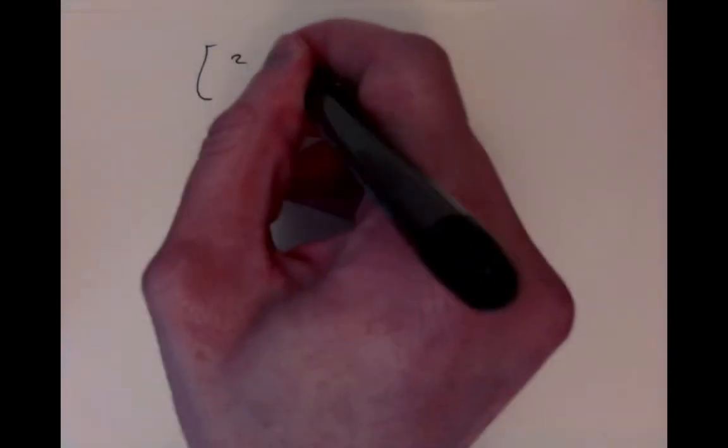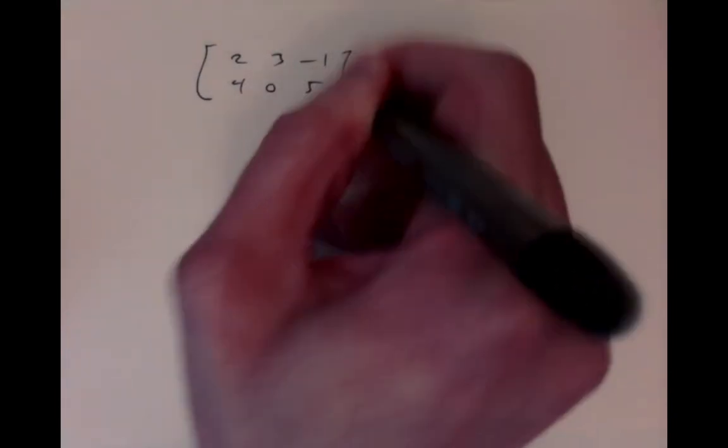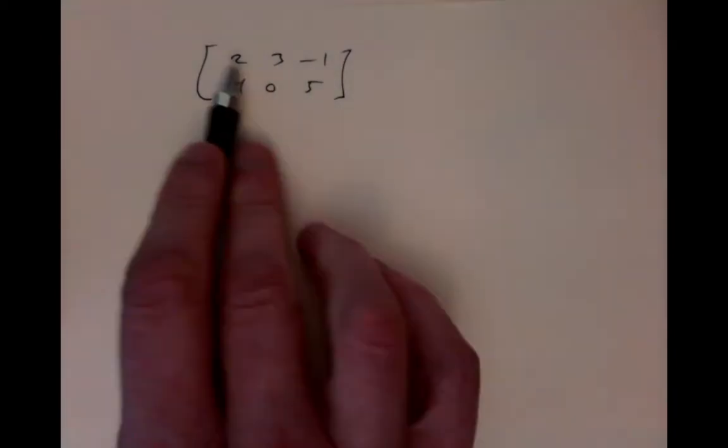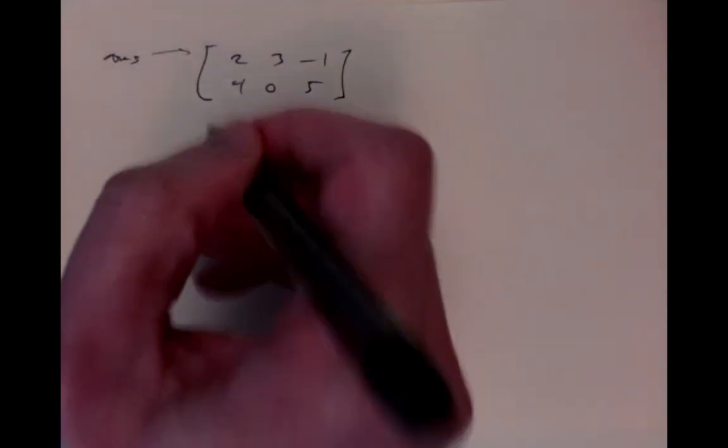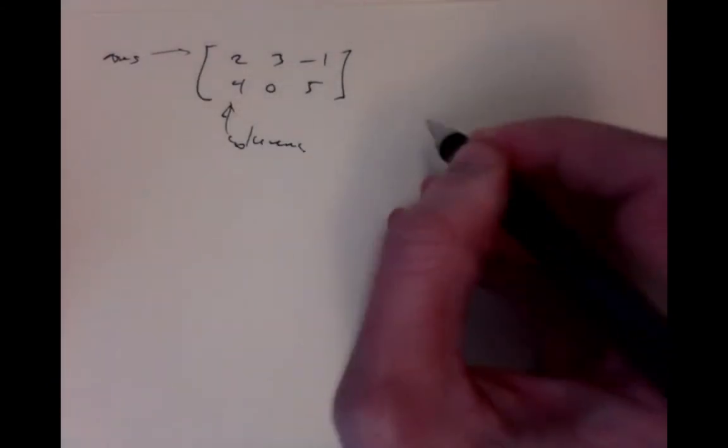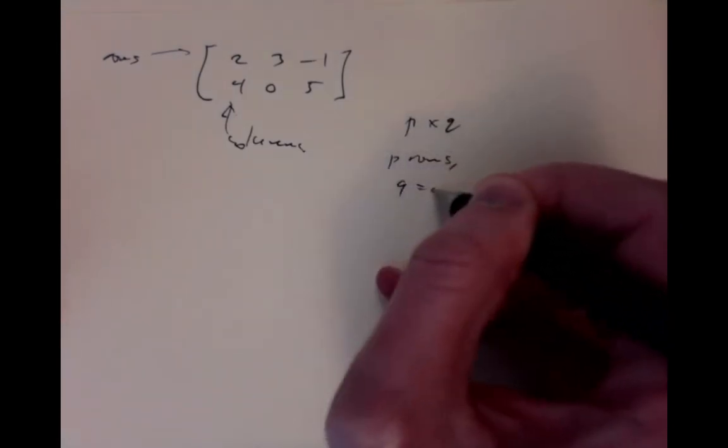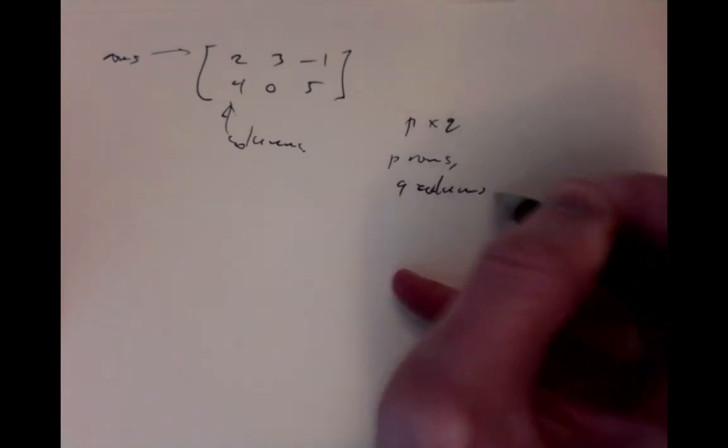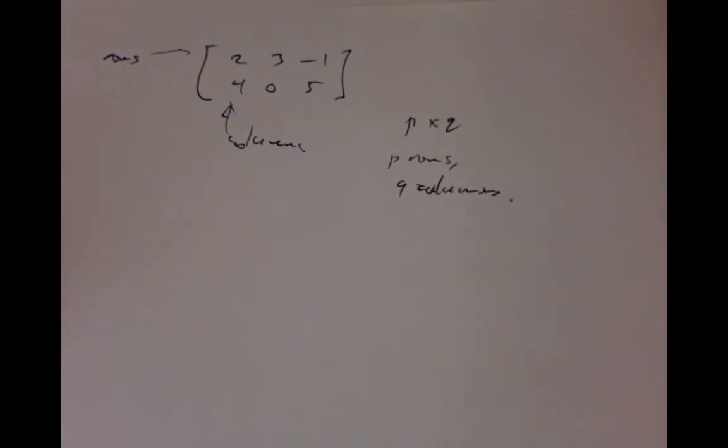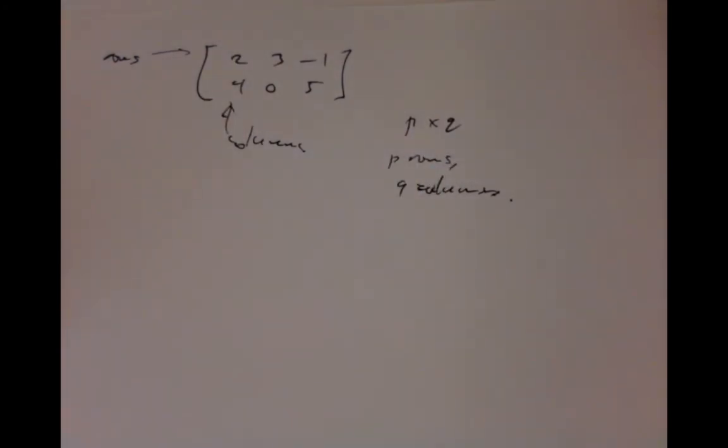A matrix is a rectangular array of numbers. We've already seen some of them. So it has rows and columns. And we'll say it's p by q to mean it has p rows and q columns. So that's how we measure the size of a matrix.